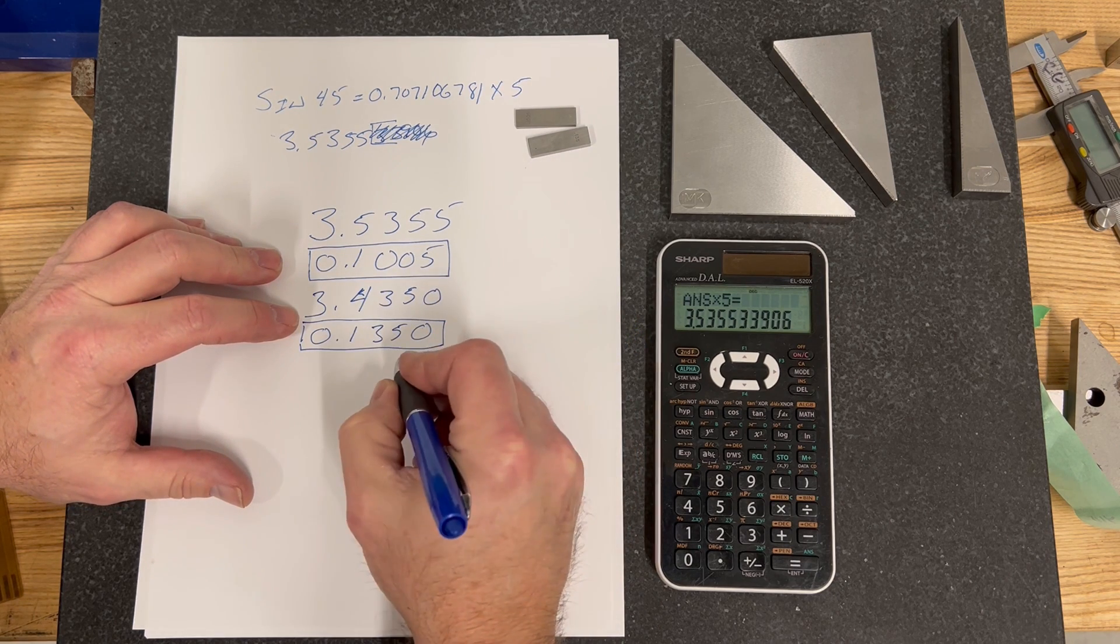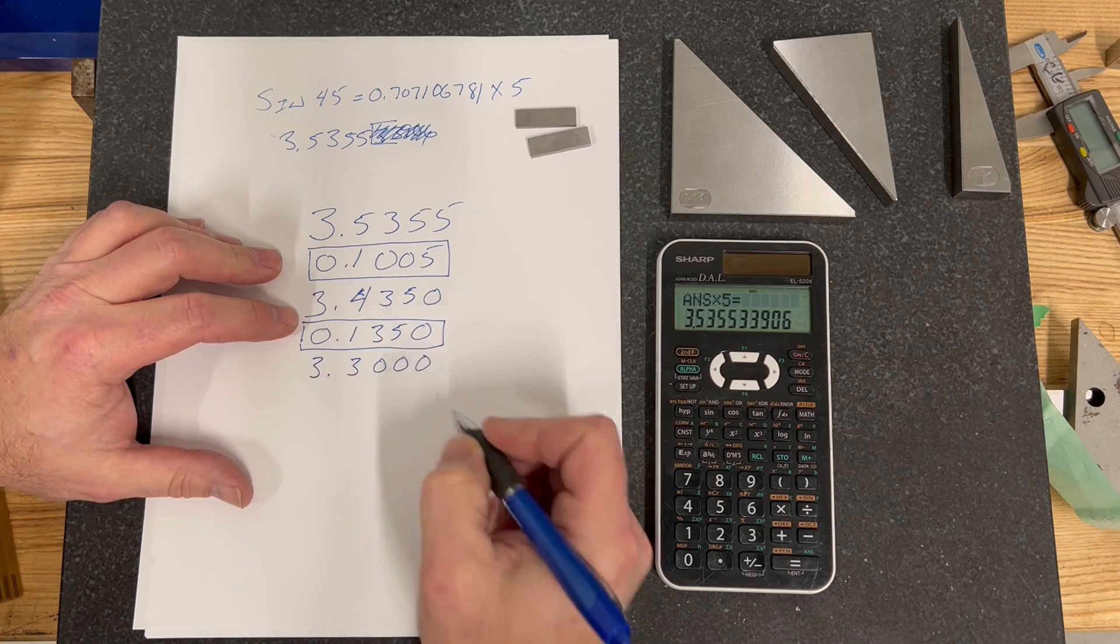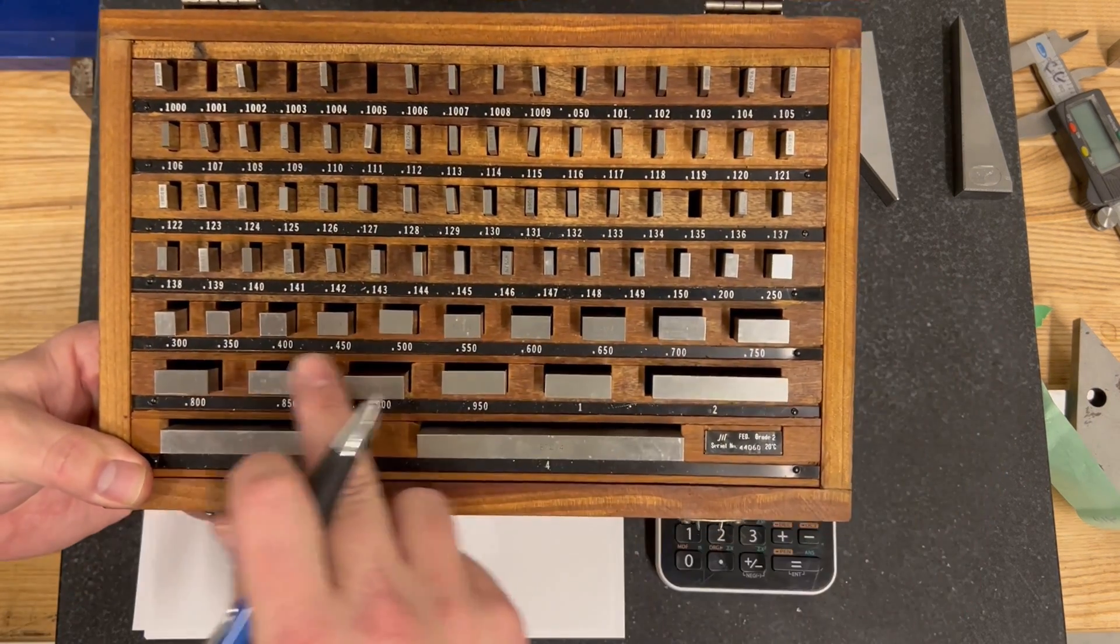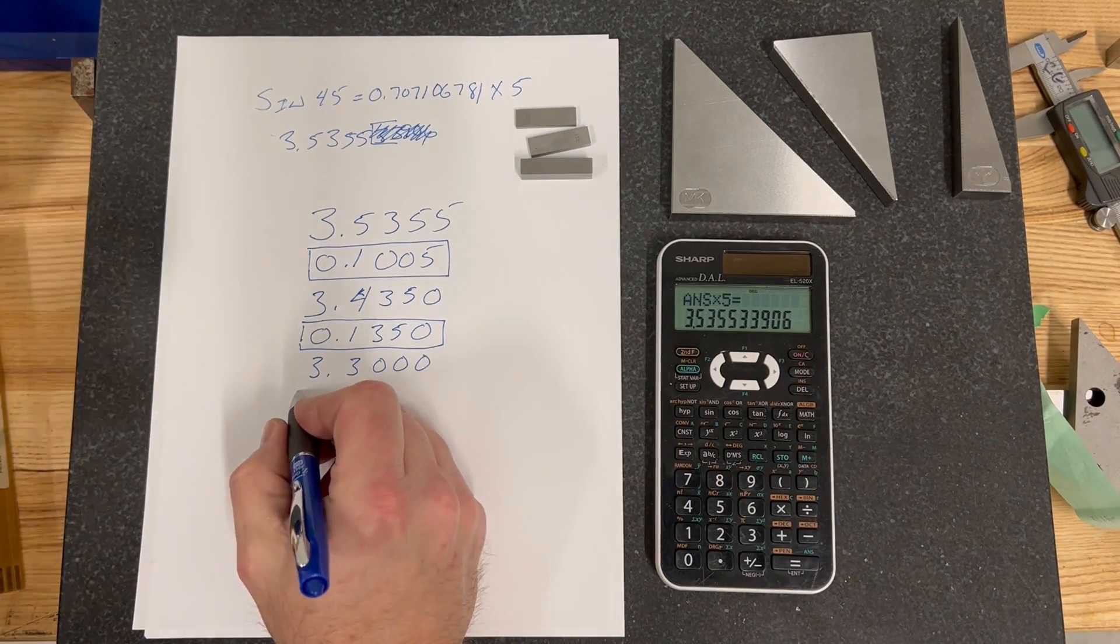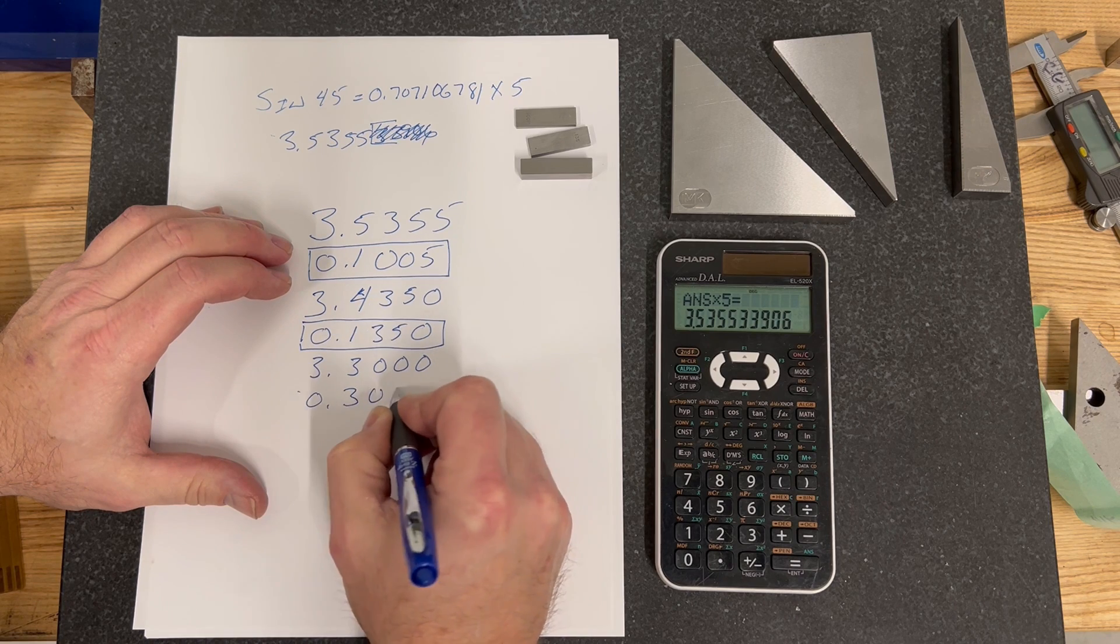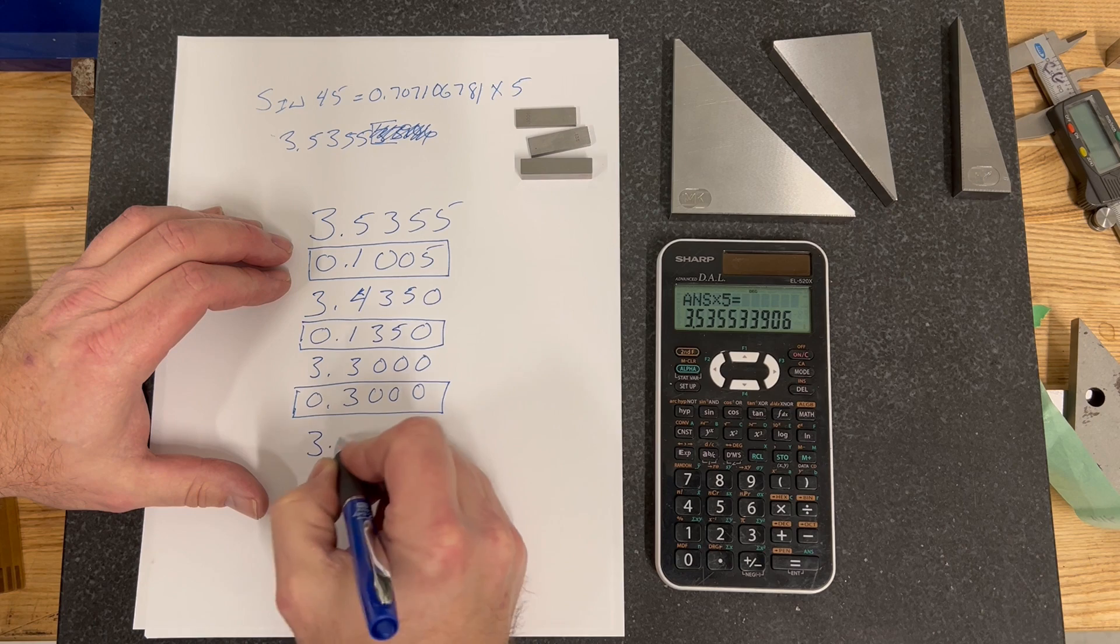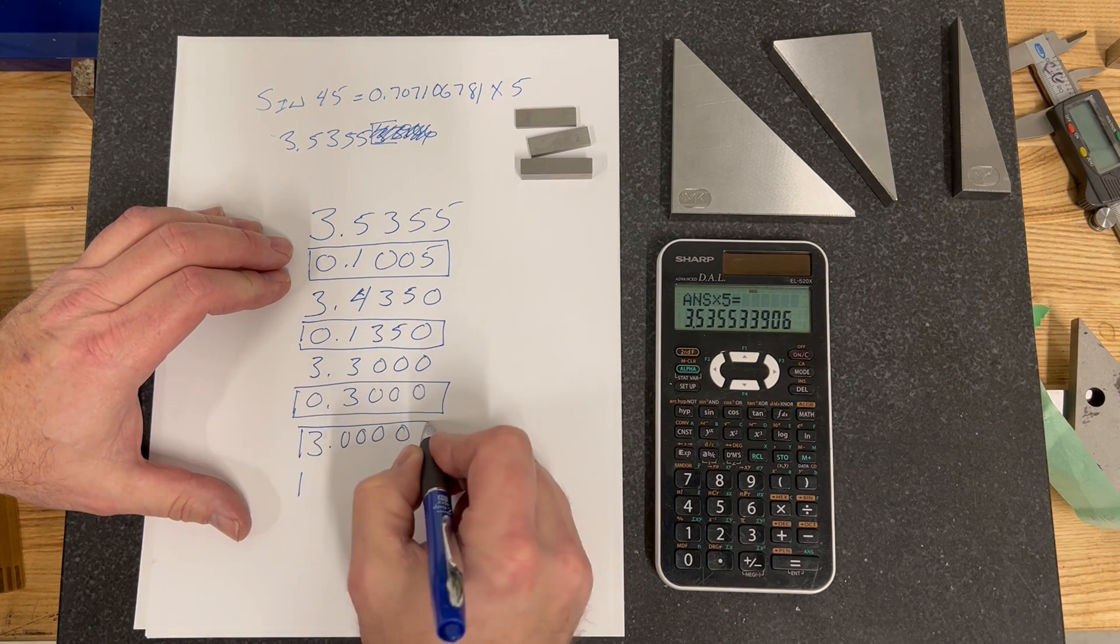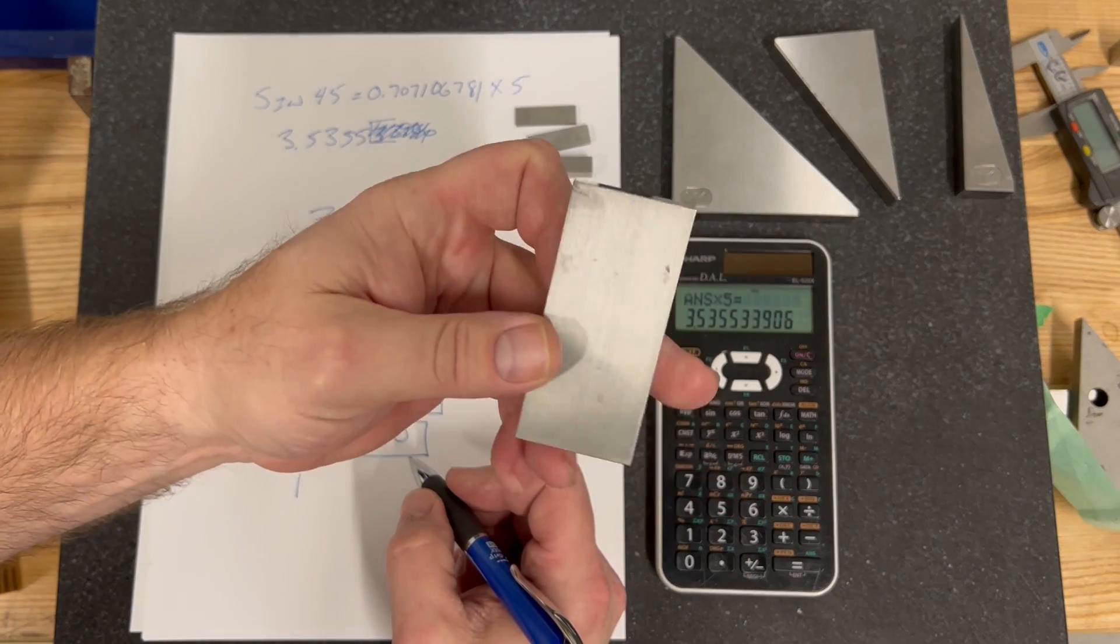Then we subtract it. 0, 0, 0, 3, 3. We're going to grab our 300 thou block right here. That's our third block. And then we're going to get a three inch block, which is going to be this guy here.